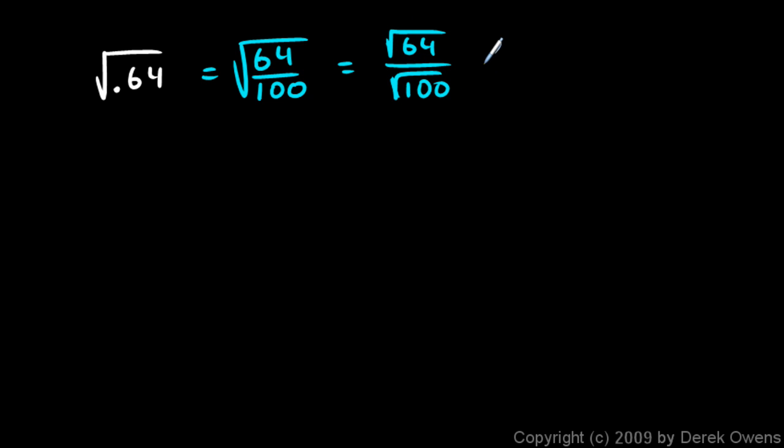And the square root of 64 is just 8, and the square root of 100 is 10. And that comes out to 0.8. Now a lot of times you would do this step in your head. You would just think to yourself, okay, the square root of 64 is 8, and the square root of 100 is 10. And you'd go straight to that step, and that's fine.